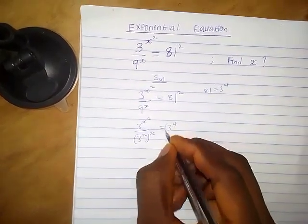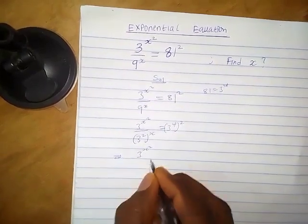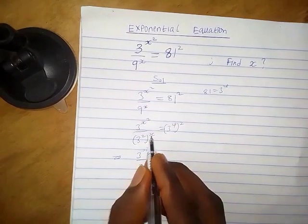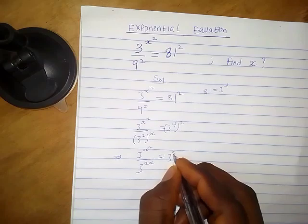So we have 3 raised to the power 4 times 2, which is 2 squared. This implies 3 raised to the power x squared over 3 raised to the power 2x equals 3 raised to the power 8.